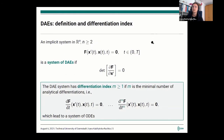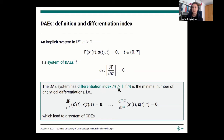Some of you may not be so familiar with DAEs, so I will present some basics. A DAE is called an implicit system written in R^n, where n is greater or equal to 2, with a sufficiently smooth function f. Such an implicit system is a system of DAEs if the determinant of the derivative of this vector-valued function with respect to x prime is equal to zero. So if you just had some constant mass matrix multiplied by x prime, this mass matrix would have been singular. DAEs are classified by the differentiation index m, where m is the minimal number of analytical differentiations you have to perform to obtain a system of ODEs.